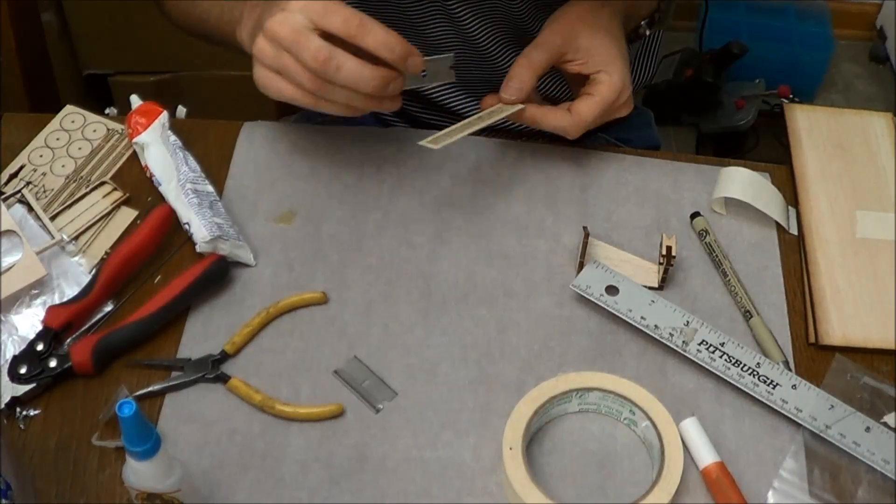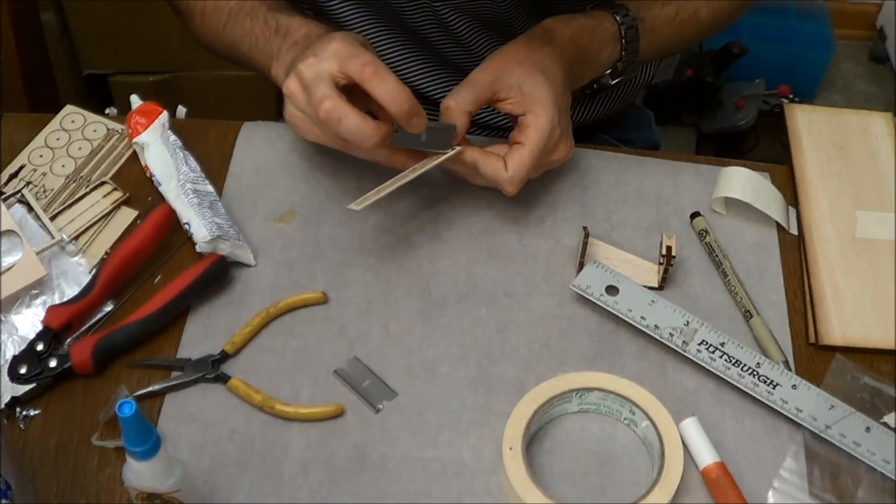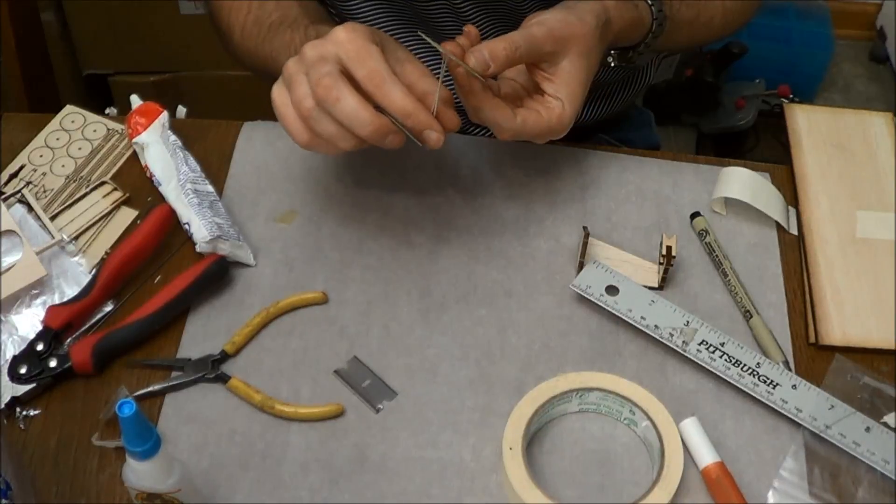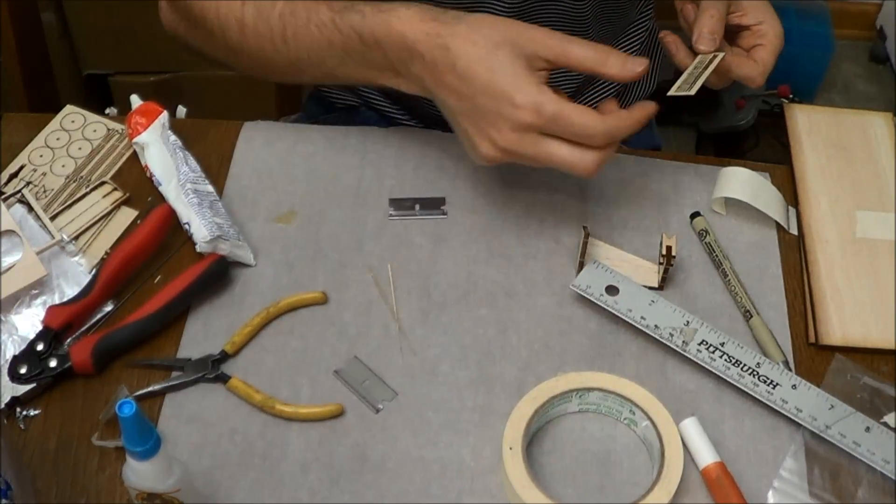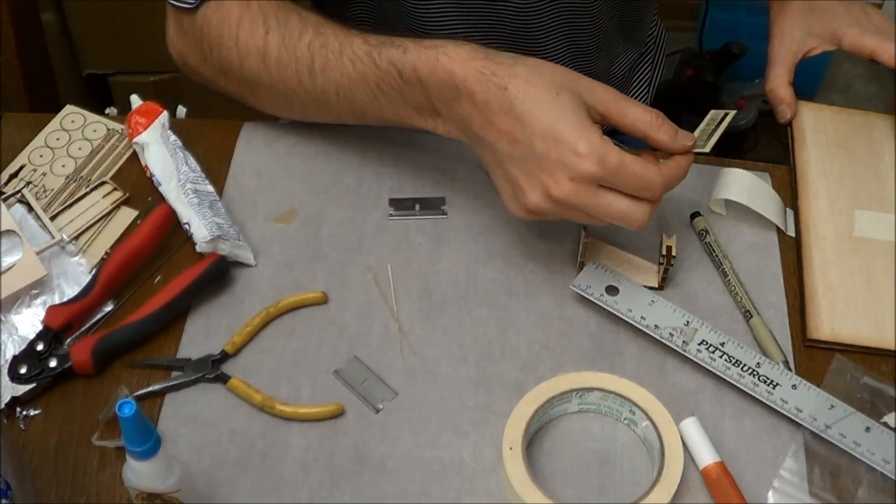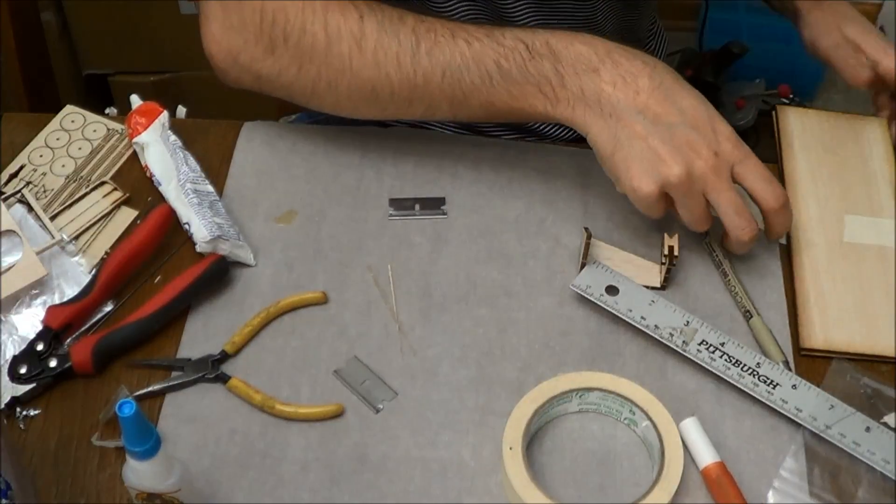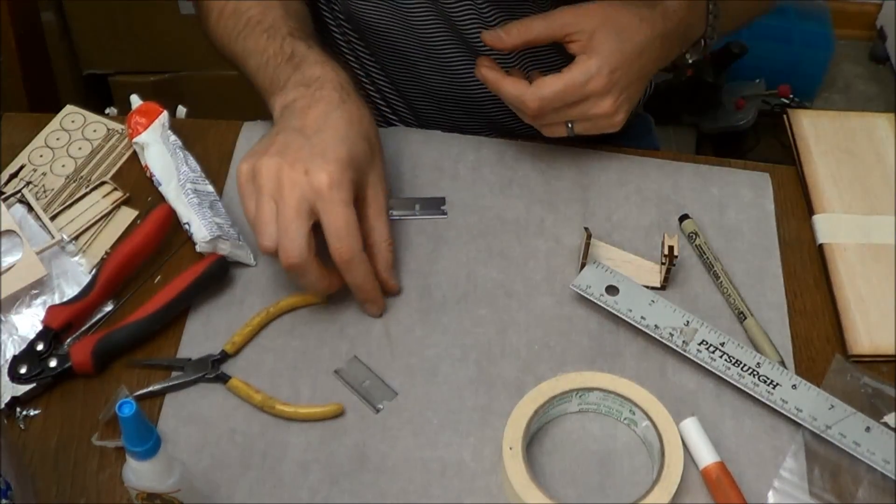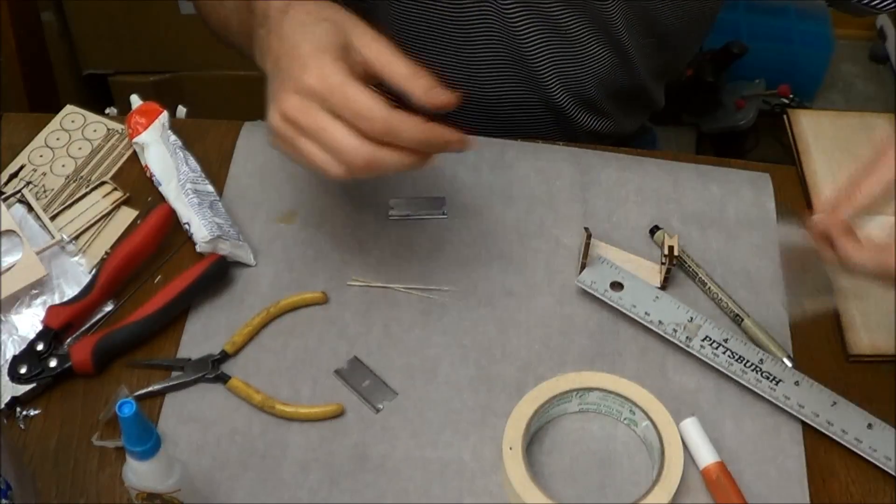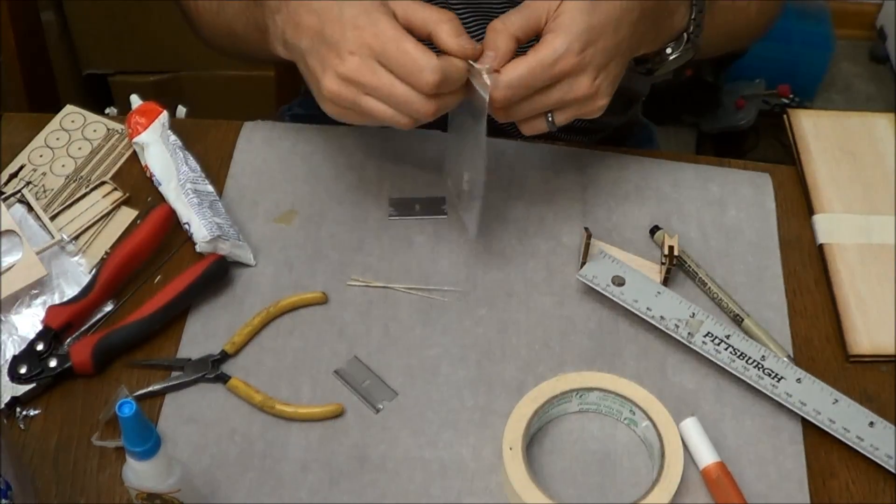And be careful because these are very, very thin and a little on the fragile side. Once it's assembled into a prop, it'll actually be a little bit stronger. So we'll take those two and get ourselves out a propeller shaft.